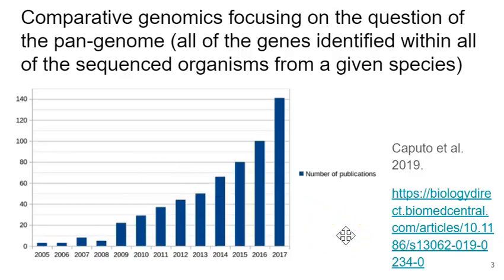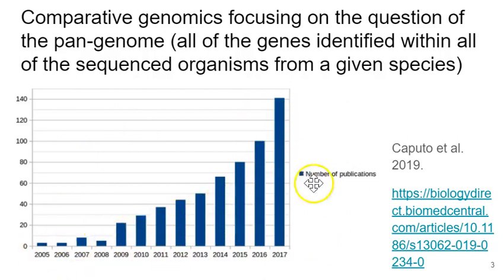A pan-genome means all of the genes that have been identified within all of the sequenced organisms from a given species or perhaps type. This particular figure illustrates the increase in the numbers of publications in the databases of papers that refer to pan-genomes. More and more people are taking all of the available microbial genomes — although you can also look at a pan-genome for other non-microbial species — this presentation is going to focus on microbial species.